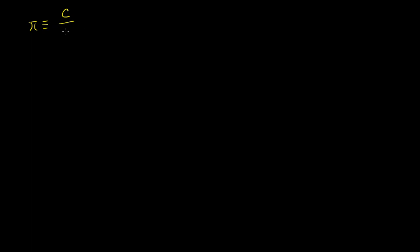Pi is defined as the ratio of the circumference of a circle to its diameter, which is the same thing as the ratio of the circumference of the circle to 2 times the radius. And from that, we get all these interesting formulas: if you have the radius and you want to calculate the circumference, multiply both sides by 2 times the radius, and you get 2πr equals the circumference — or more familiarly, circumference equals 2πr.